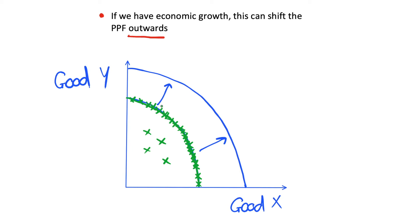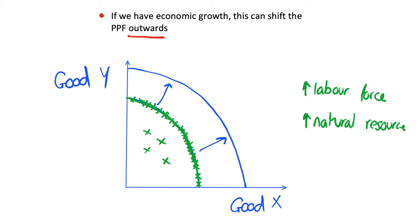At the moment we can produce at most this amount of goods on this frontier. Now consider that we have an increase in the level of resources in our economy — let's say we increase our labour force so we have more workers, or we have an increase in natural resources such as finding oil or a deposit of metals which allow us to create more factories, or we have an increase in our technological understanding, which we definitely observe very often in reality.